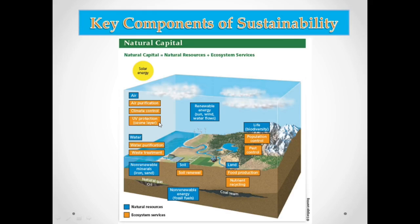Our ecosystem services protect the ozone layer from harmful UV rays coming from the sun, protecting us as well. Without the ozone layer, we would be directly exposed to harmful UV radiation. In terms of water as a renewable resource, we also have water purification and wastewater treatment — water must be purified before it becomes safe drinking water.